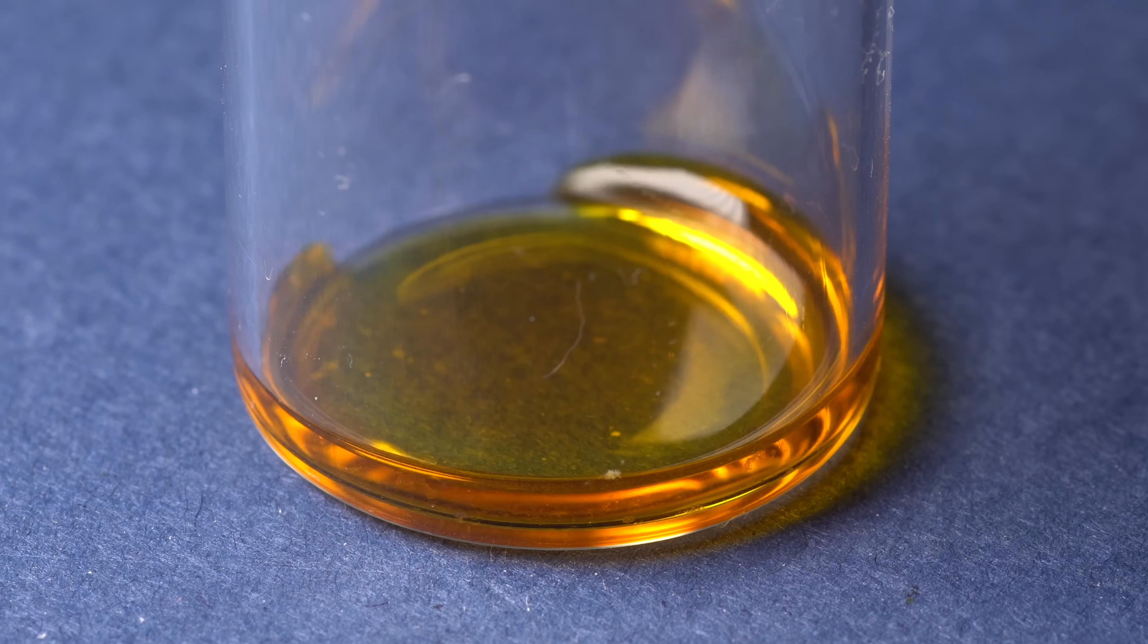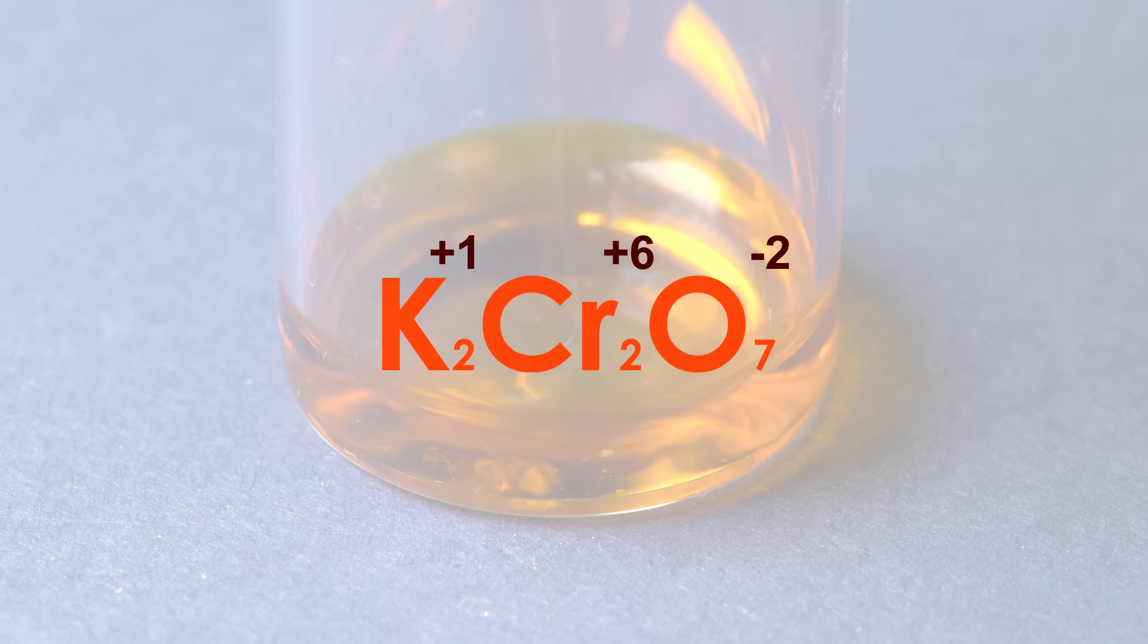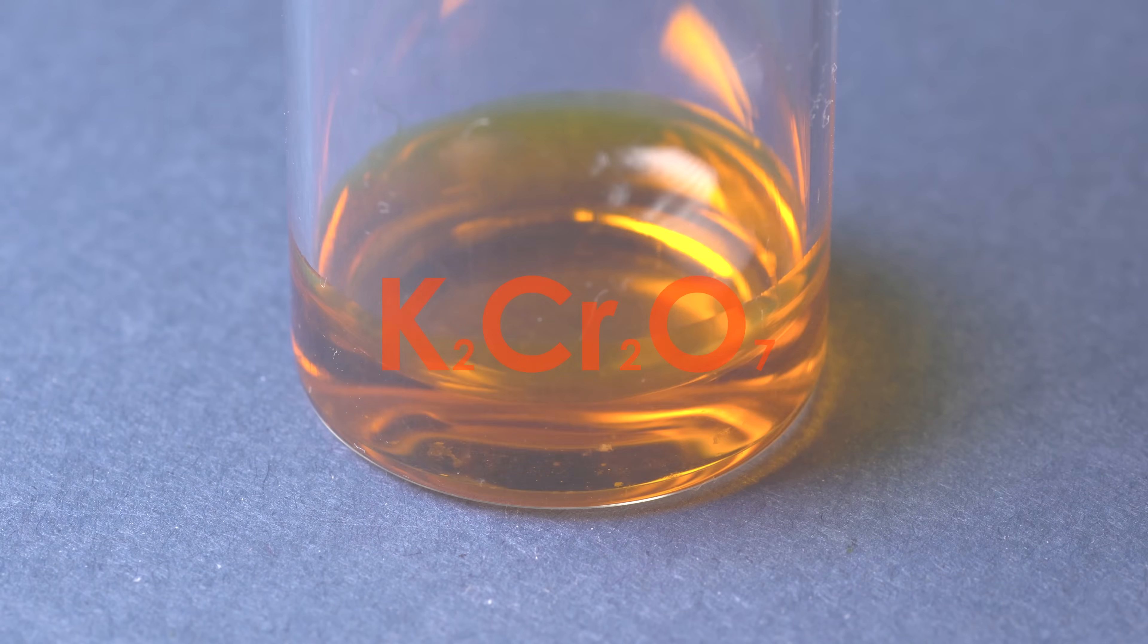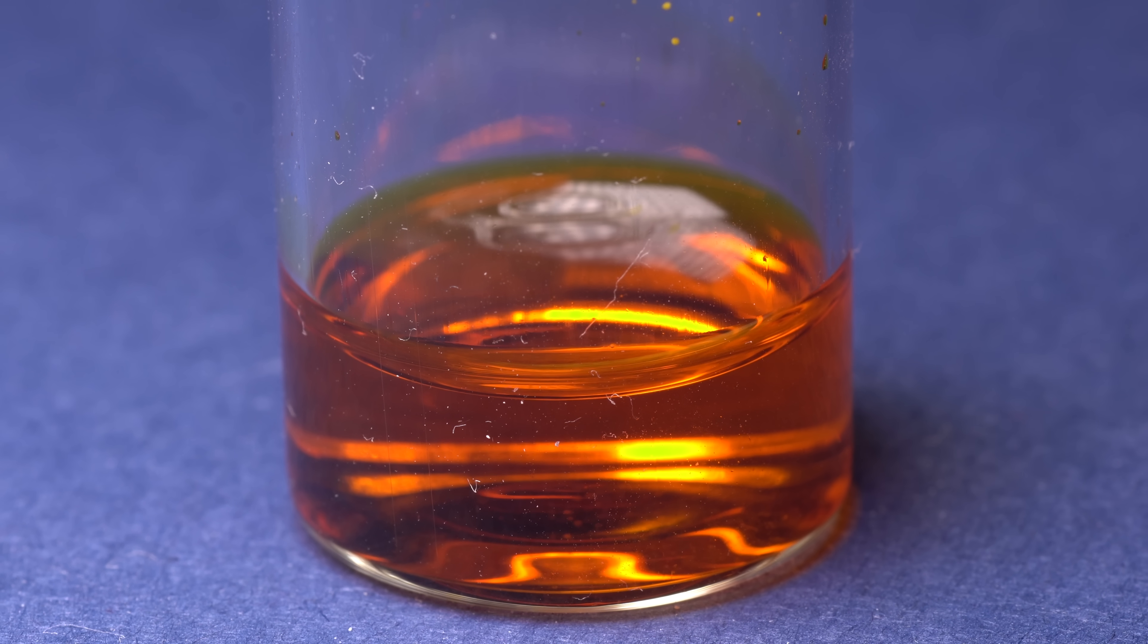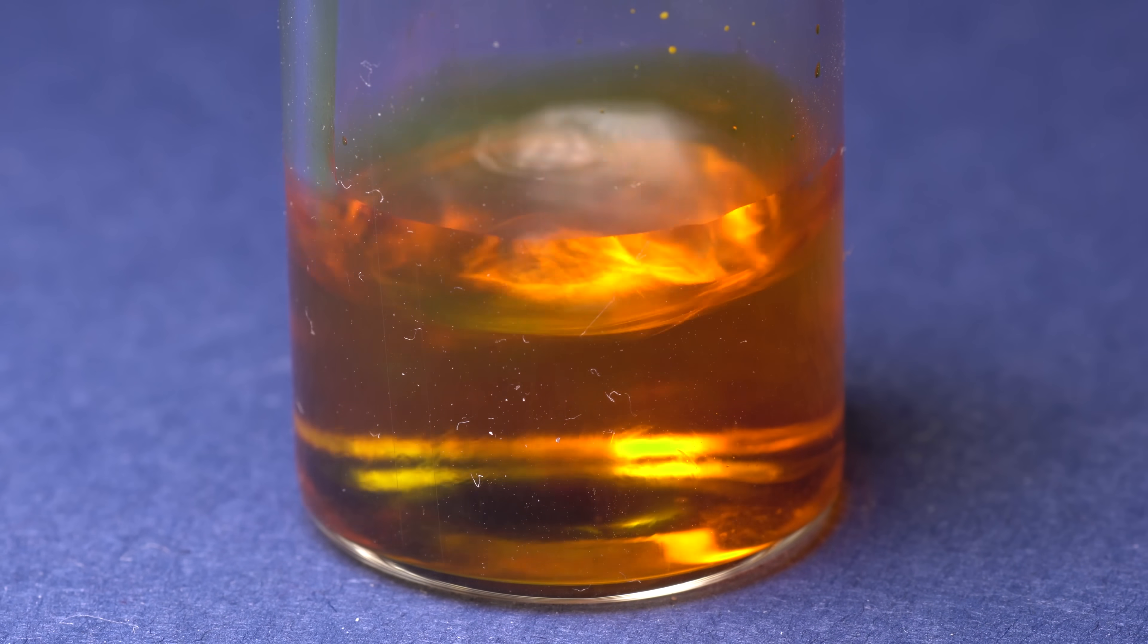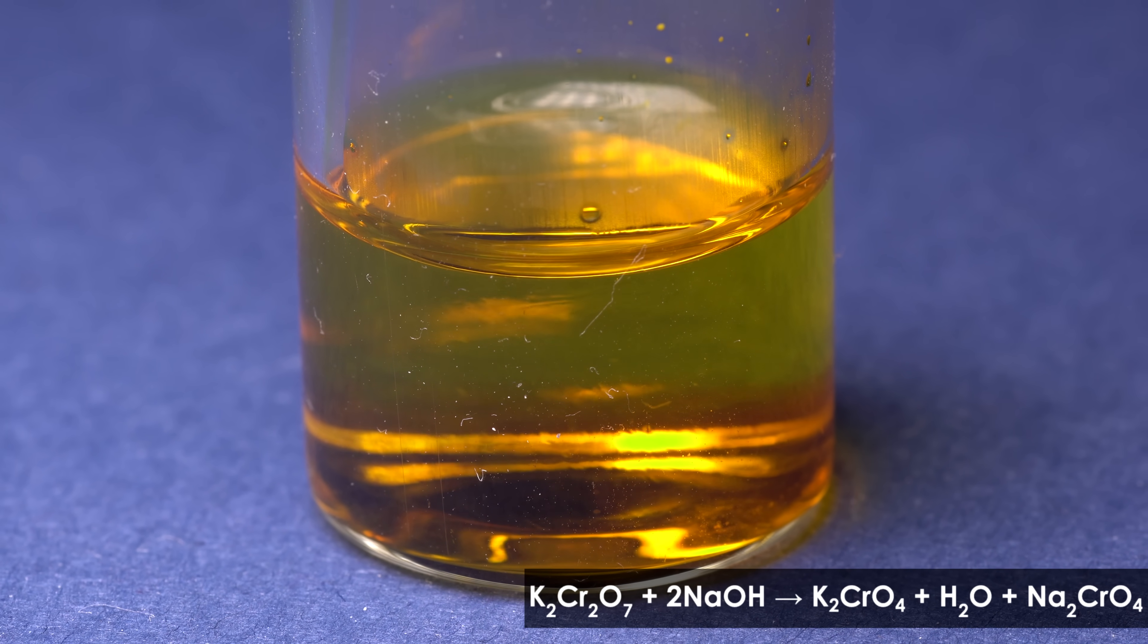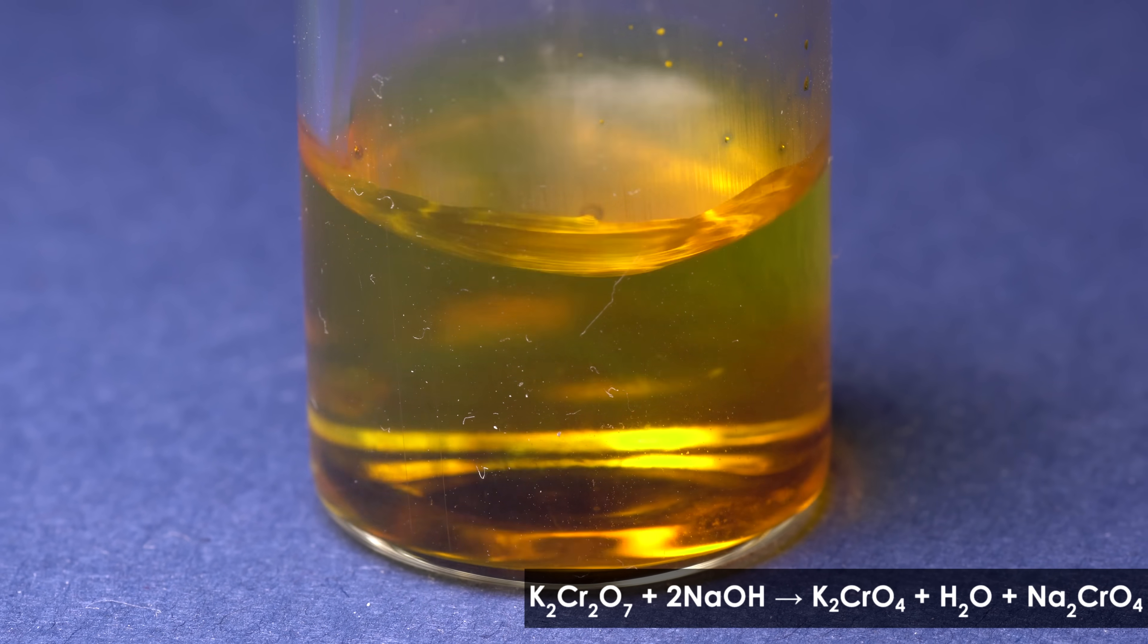Potassium dichromate is very soluble in water. In this compound, chromium has an oxidation state of plus 6. If you add a little bit of alkali, i.e. sodium hydroxide, to the orange solution of potassium dichromate, in an alkaline environment, the dichromate will turn into chromate and become yellow.